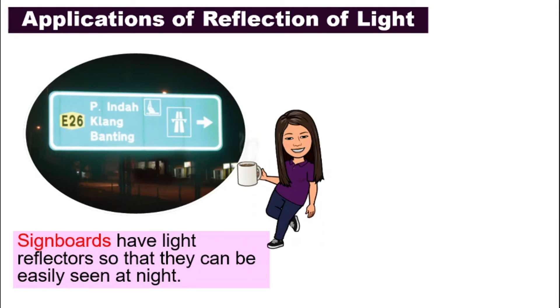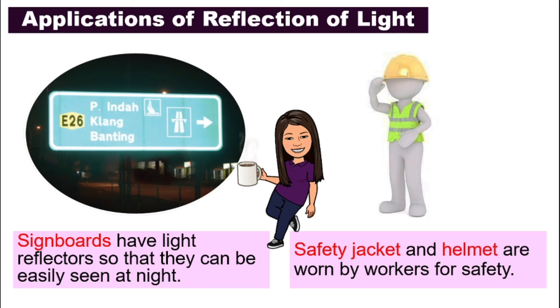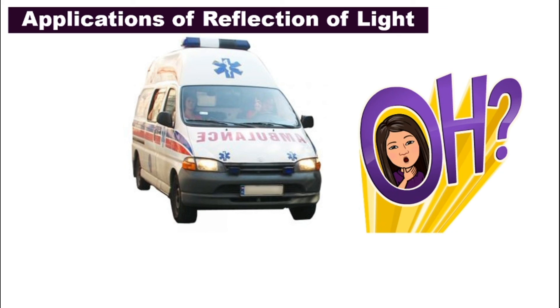And also many signboards have light reflectors so that they can be seen easily at night. And workers normally wear safety jacket and helmet that are also having the light reflectors to help us to see them clearly. That is for safety purposes. And if you ever notice the ambulance, the words on the ambulance are always written laterally inverted, they are written inverted sideways. Have you ever wondered why?